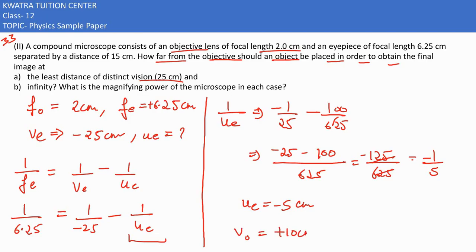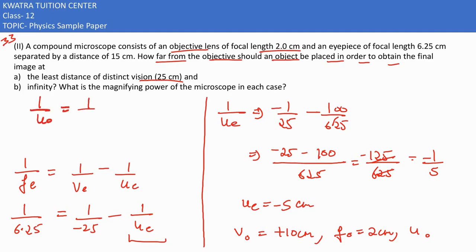For the objective, we have v₀ = positive 10 cm and f₀ = 2 cm. We need to find u₀. Now we're calculating the u₀ value for the objective.